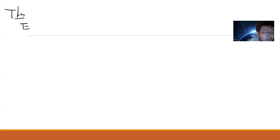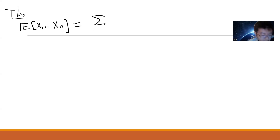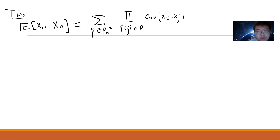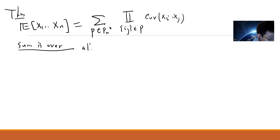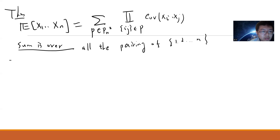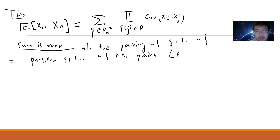What the theorem says is: you take the expectation value of x1 up to xn, and it equals the sum over p belonging to the set of pairings P_n, where (i,j) belong to p, of the covariance of x_i and x_j. The sum is over all pairings of {1, 2, ..., n} — equivalently, all partitions of {1,...,n} into pairs, also called a perfect matching.